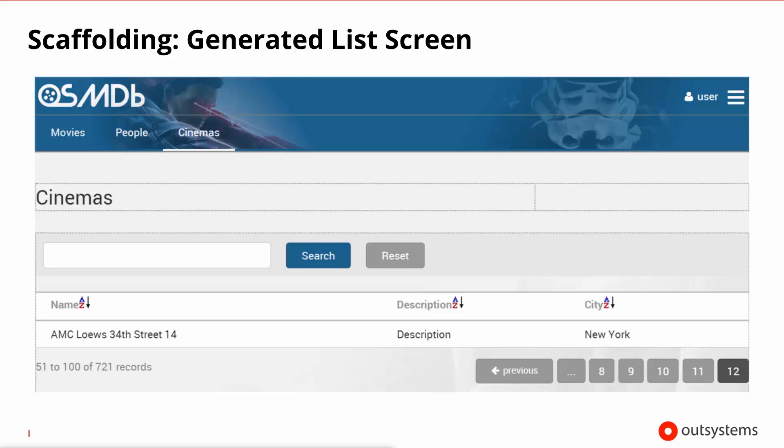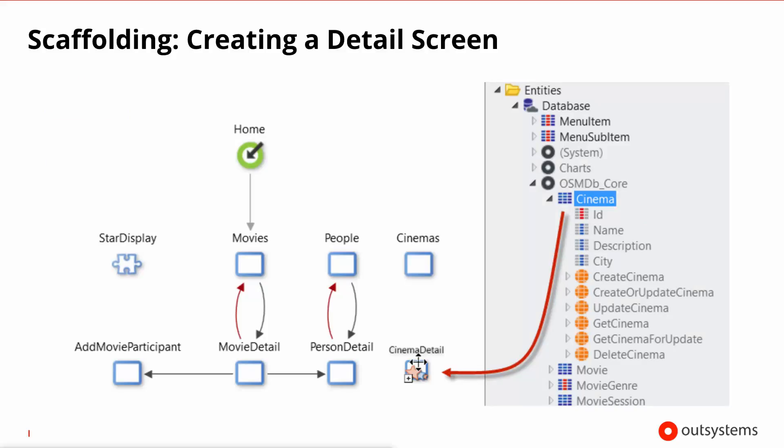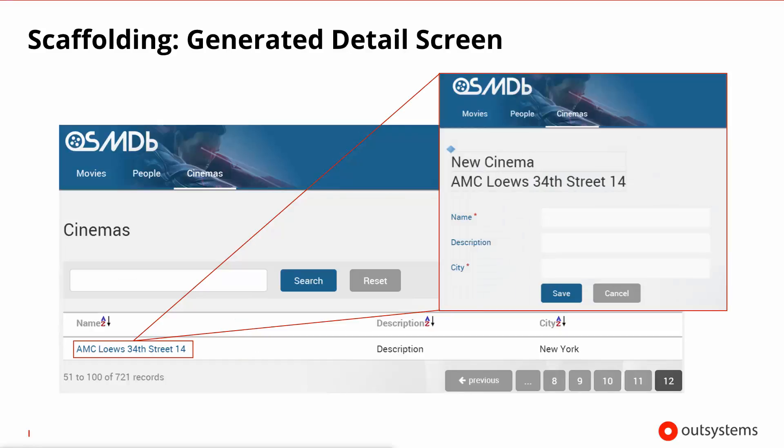If you drag and drop the cinema entity into the canvas of screens again, the suggestion will be to create something called cinema detail, which creates a detail screen over the source entity, displaying one cinema. On the right hand side, you can see a screenshot showing this detailed cinema — it's a full blown form with save and cancel buttons. Going back to the list cinemas screen generated previously, you'll see that the list has been augmented to include a link that allows you to open the details. So creating a detail screen actually makes changes to the list screen as well.